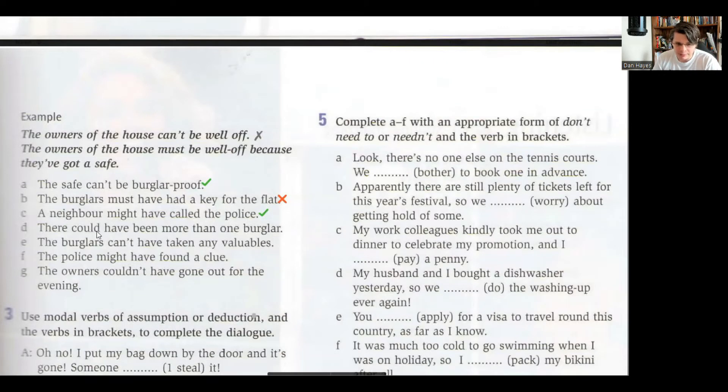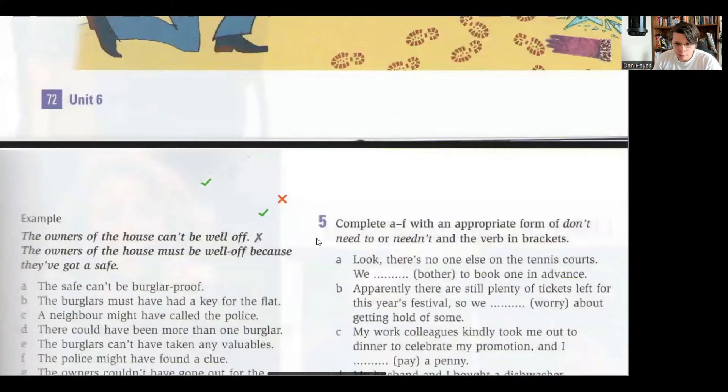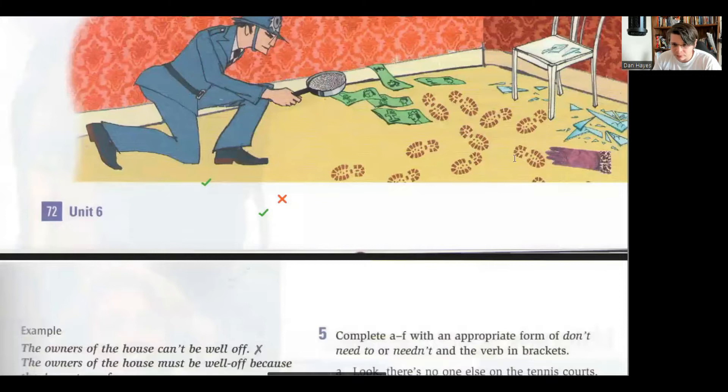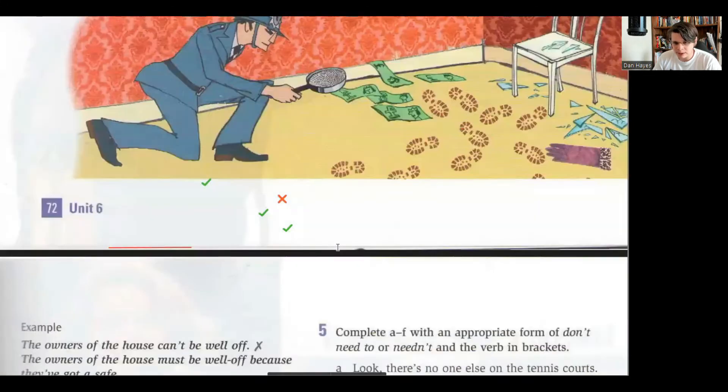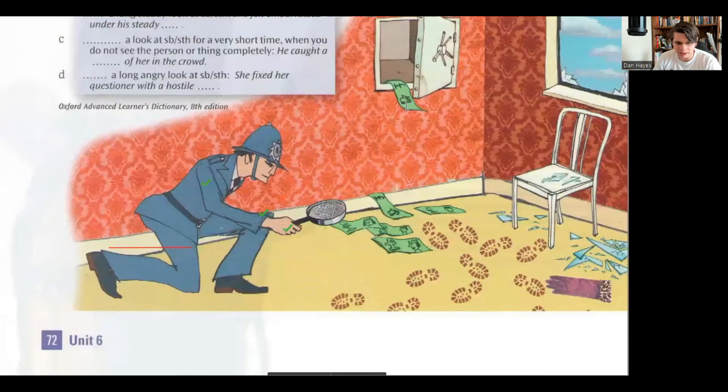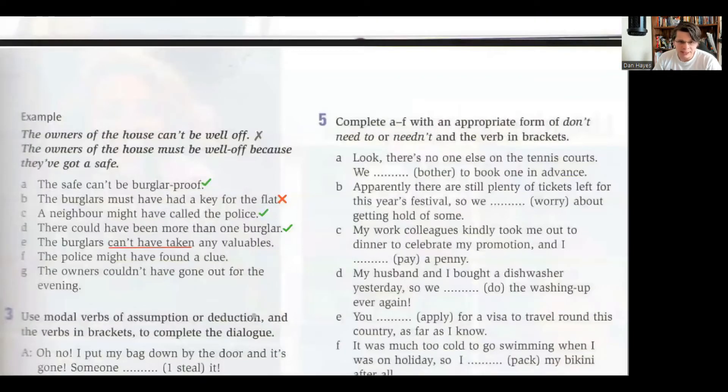There could have been more than one burglar. Well if we look at the footprints, maybe. It's the same footprint in all cases, or the same shoe print. So there could have been, yeah, who knows, maybe they bought the same shoes or something, it's possible. The burglars can't have taken - no es posible que se hayan llevado. I don't think that's right because the safe is open, the money is there.